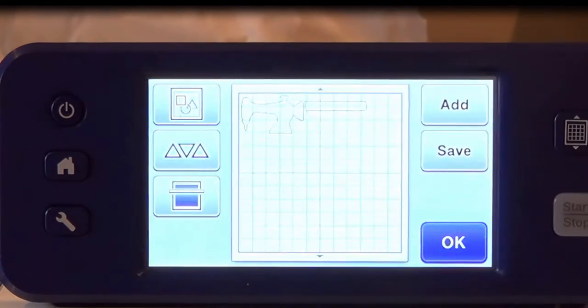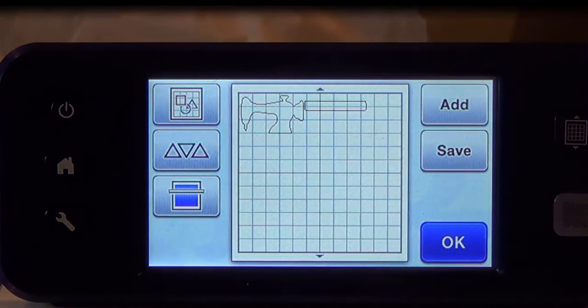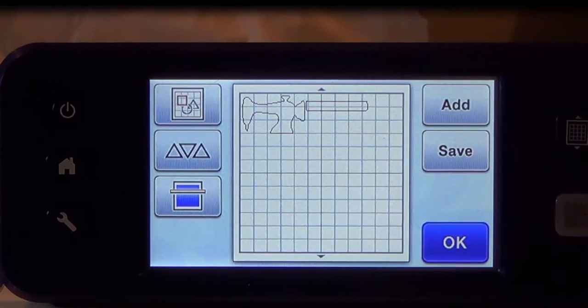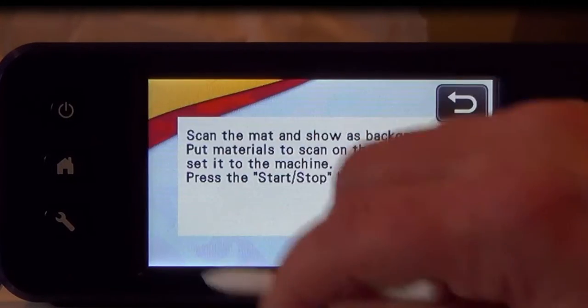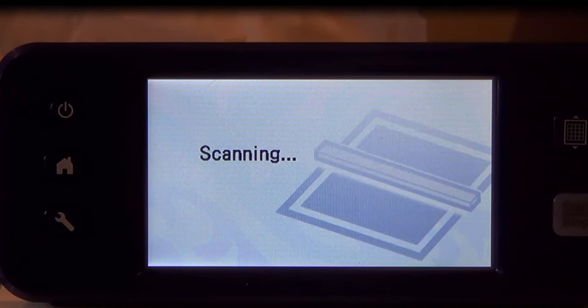Since we're already at the machine, let's go ahead and cut our pieces. I've got my fabric arranged on my mat, so I'm going to press the background scan button and start. The background will scan and will appear on my screen.